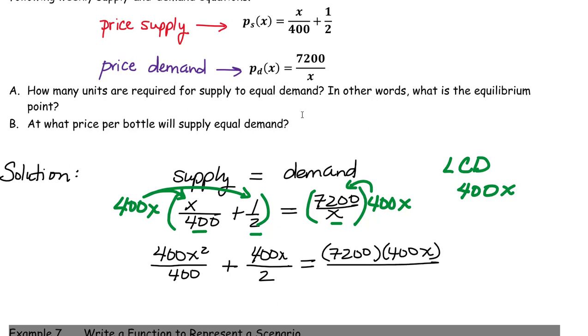Divided by X. But look what all cancels. 400 divided by 400, the 2 goes into 400, 200 times, and the X goes into the X once. So we're left with X squared plus 200X equals 2,880,000.